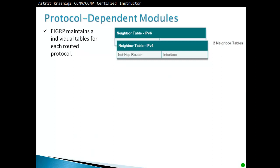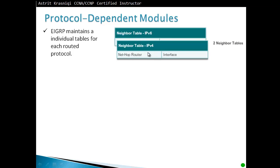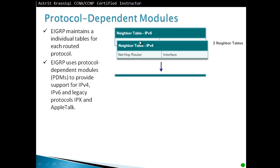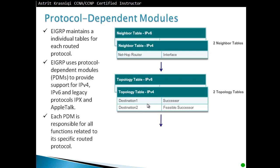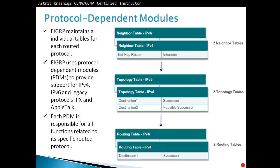Protocol Dependent Modules: EIGRP maintains individual tables for each routed protocol. If we have IPv6 neighbors we keep an IPv6 neighbor table; if we have IPv4 neighbors we keep an IPv4 neighbor table. EIGRP uses PDMs to support IPv4, IPv6, and legacy protocols like IPX and AppleTalk. For each protocol, we maintain a separate neighbor table and topology table containing successor and feasible successor — the primary and backup paths. Each protocol dependent module is responsible for all functions related to its specific routed protocol, and we add whatever is in the topology table to the routing table.